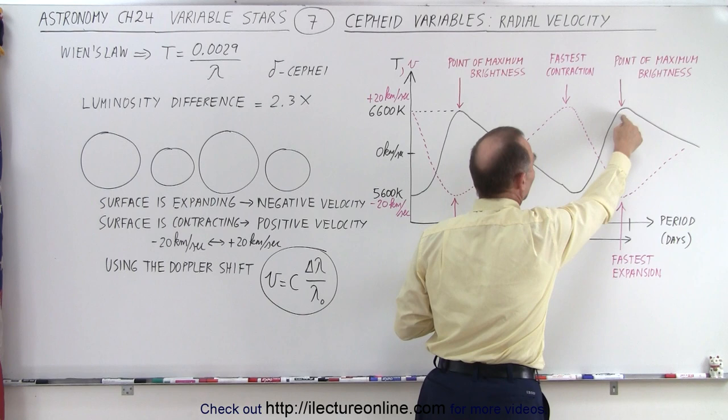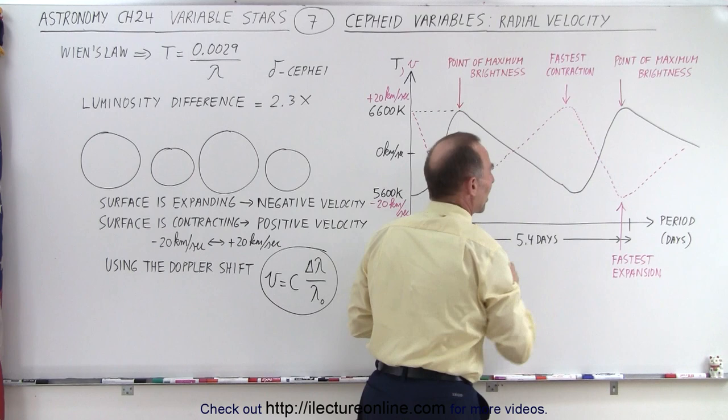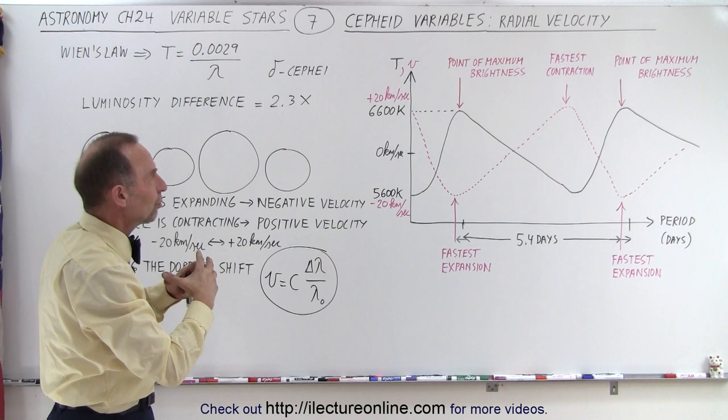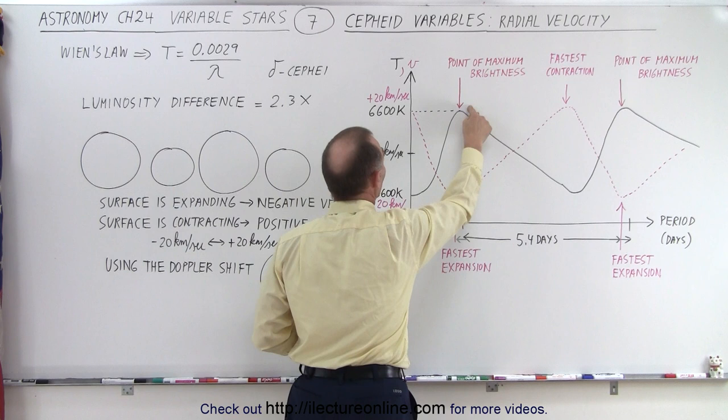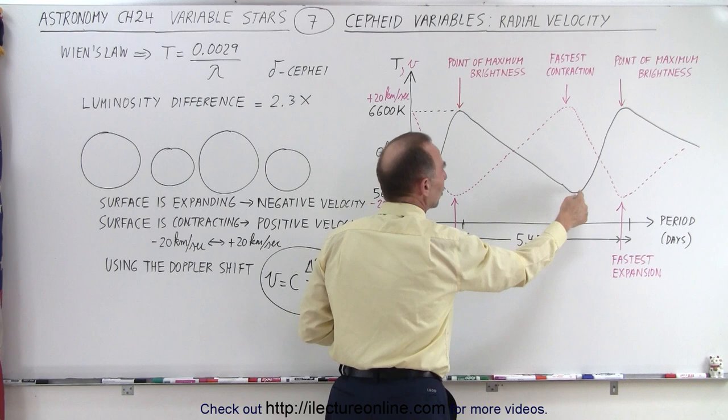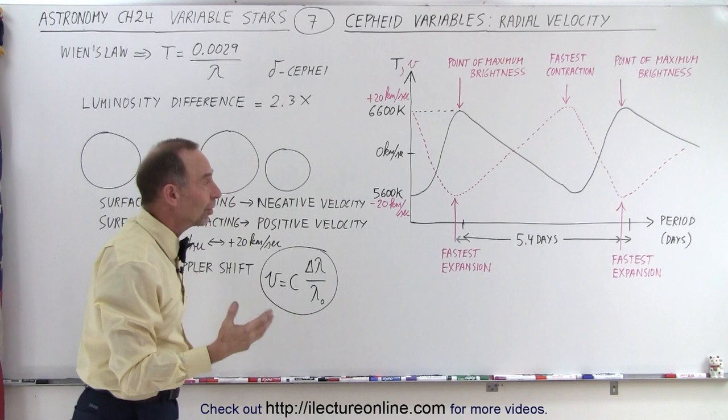Notice, it reaches its maximum expansion again at the point of maximum brightness. At the point of least brightness, it has its fastest contraction. So there's an interesting relationship between the contraction expansion of the star, and the maximum and lowest temperature of the star, and the maximum brightness and lowest brightness of the star. So notice that the maximum brightness coincides with the maximum temperature, and coincides with its fastest expansion. The lowest temperature of the star coincides with the lowest brightness, and coincides with its fastest contraction.